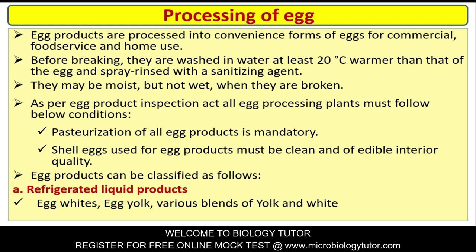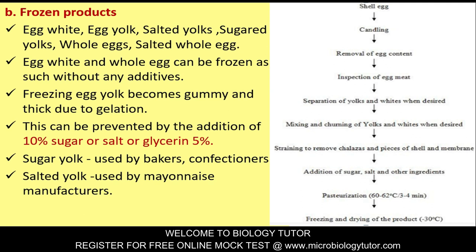Egg products can be classified as: First, refrigerated liquid products like egg whites, egg yolk, and various blends of yolk and white. Second, frozen products: egg white, egg yolk, salted yolk, sugared yolk, and whole egg can be frozen. Egg white and egg yolk can be frozen as such without any additives.